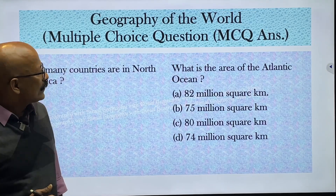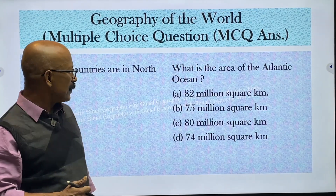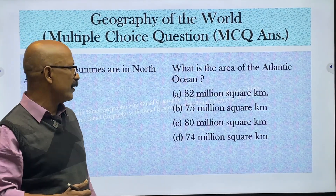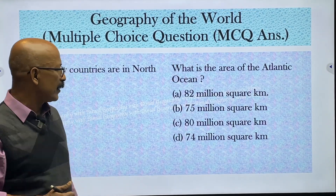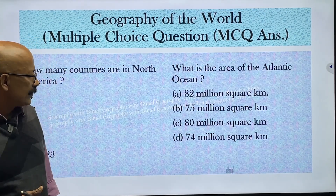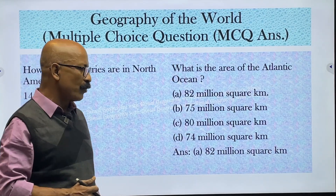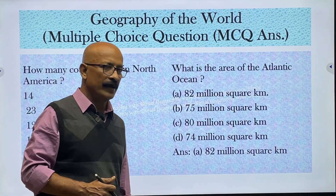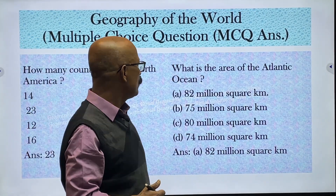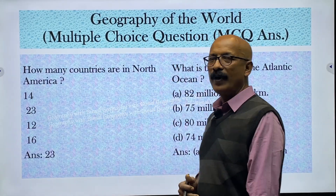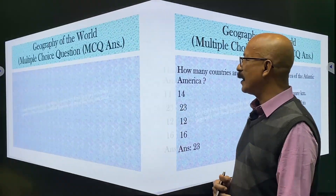What is the area of the Atlantic Ocean? Options are 82, 75, 80, and 74 million square kilometers. The answer is 82 million square kilometers — the area of the Atlantic Ocean is 82 million square kilometers.